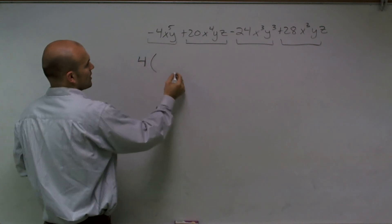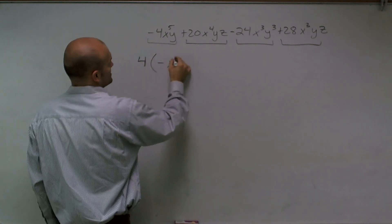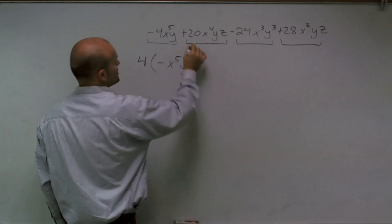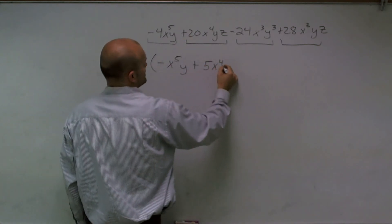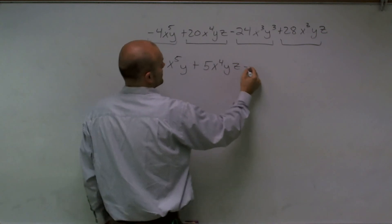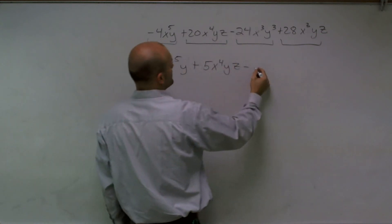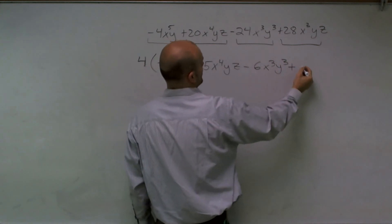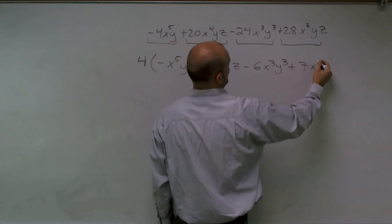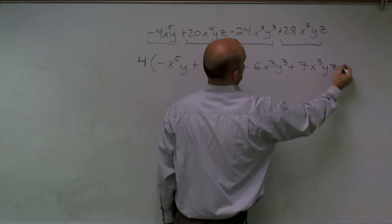And when I factor out a four, I'm left with a negative x to the fifth y, plus 20 divide out of four is going to give me a 5x to the fourth yz, minus negative 24 factor out of four give me negative 6x cubed y cubed, plus 7x cubed yz.